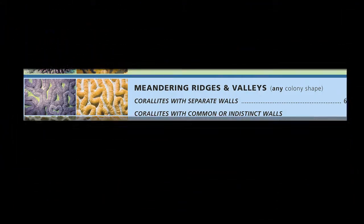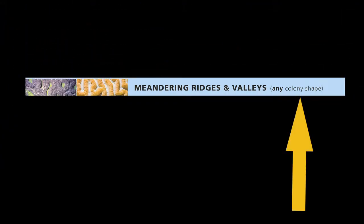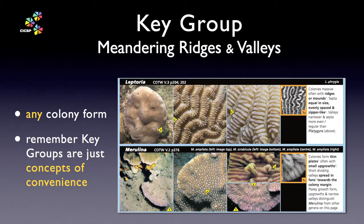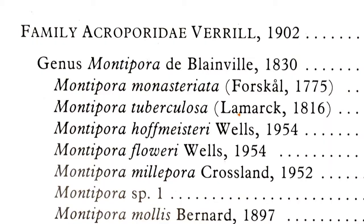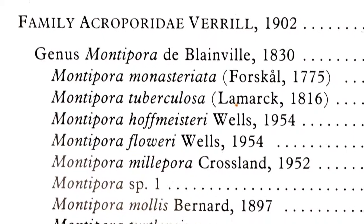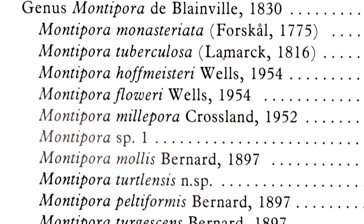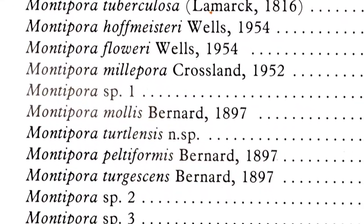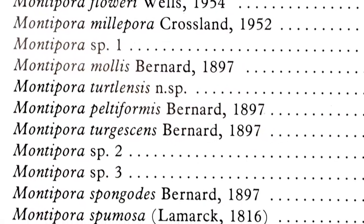Note that the Coral Finder stresses this in the text. Think of key groups as concepts of convenience that we use to help make coral identification easier to learn. In that sense, they don't reflect any deep evolutionary relationships in the way that scientific classification attempts to do.